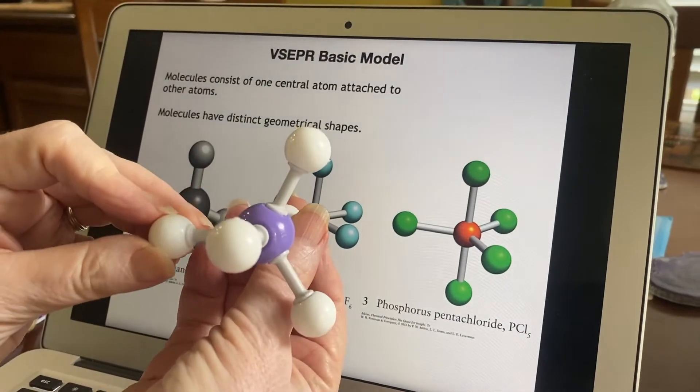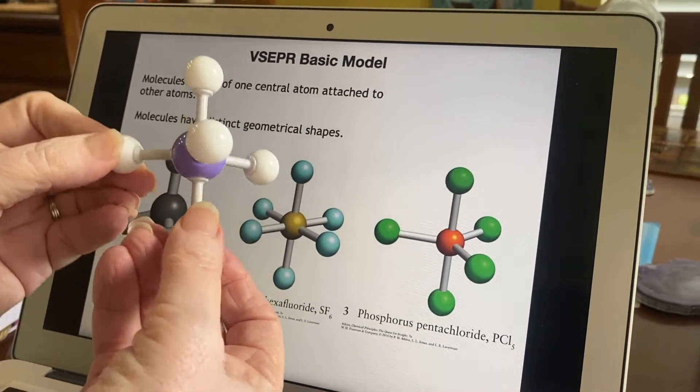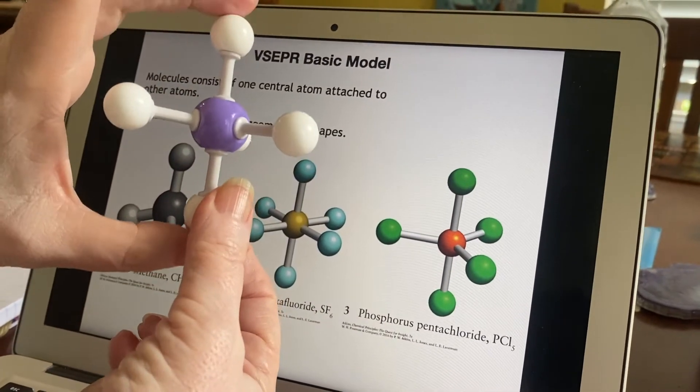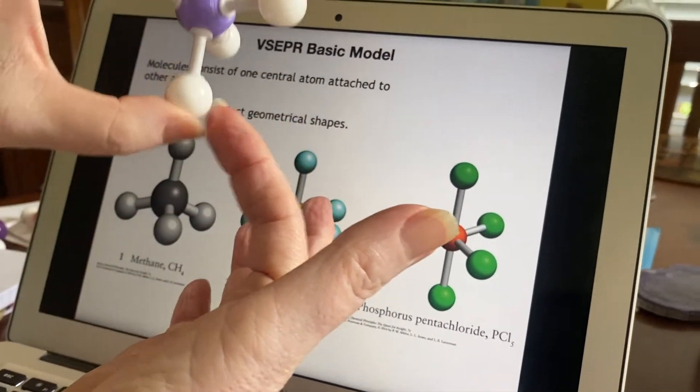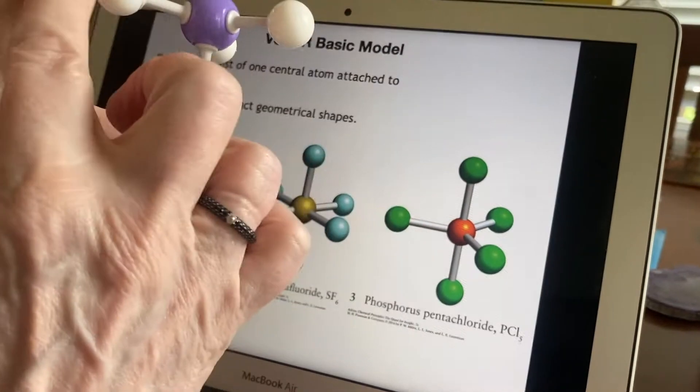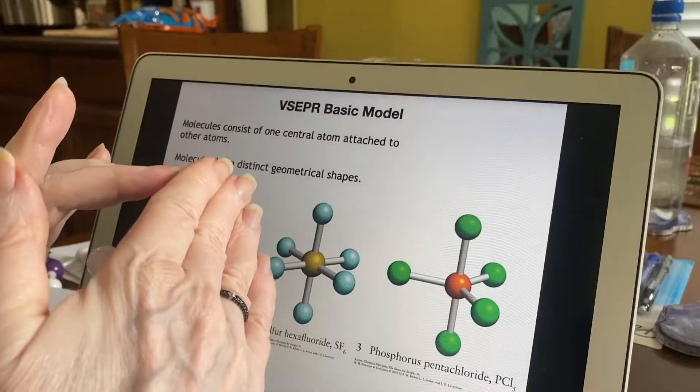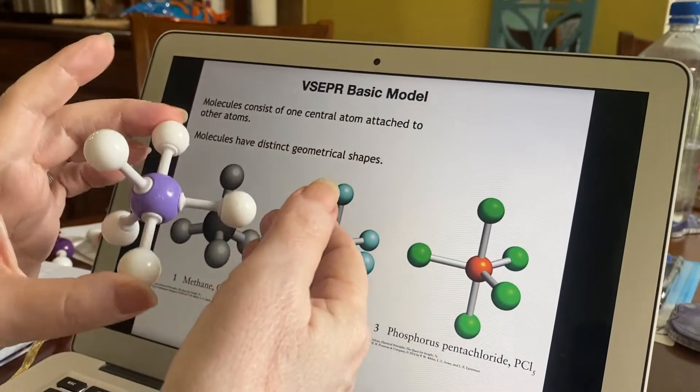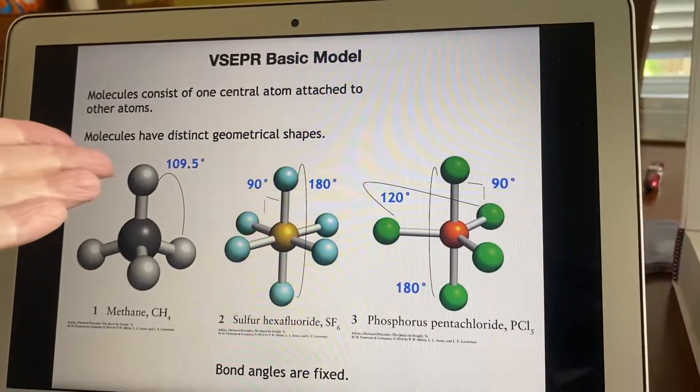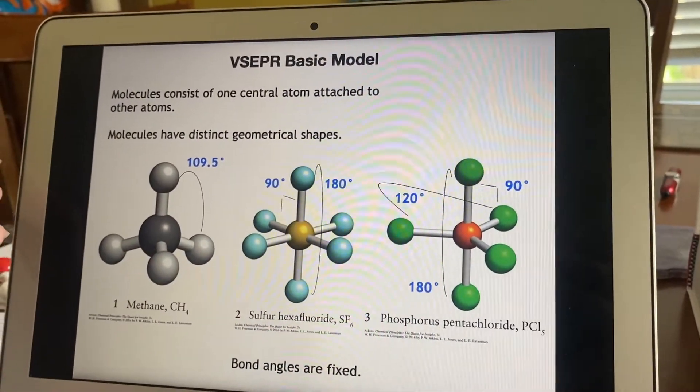If I twist it around, we can start examining that and see that two of these are out here like this, and the other three are around the equator. That's the way they consider it. It looks like it would have six sides. As a result, there are angles that appear.